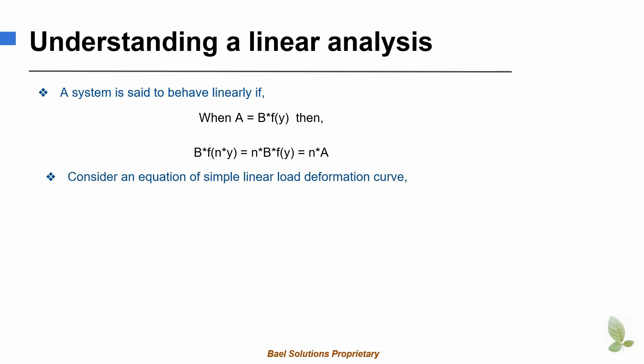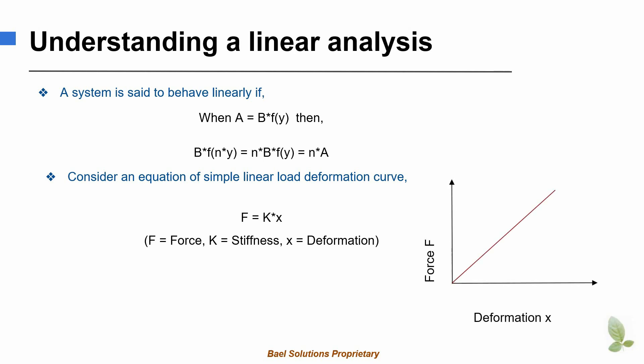Consider an equation of a simple load-deflection curve: f equals k times x. In this equation, f is the force, k is the stiffness of the structure, and x is the deformation in the structure. The above equation is plotted on a load versus deformation curve shown in the figure. On the x-axis we have deformation in the structure, small x, while on the y-axis we have applied force f. We are assuming that the load f is proportional to the deformation. Stiffness k is the slope of this curve.